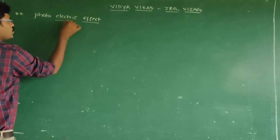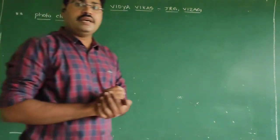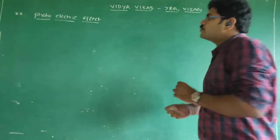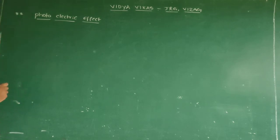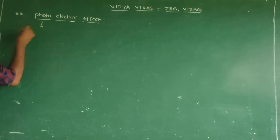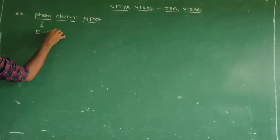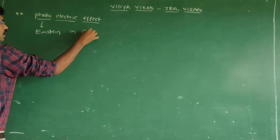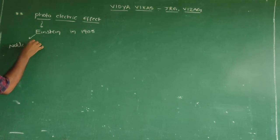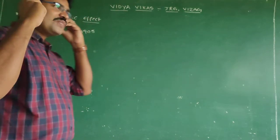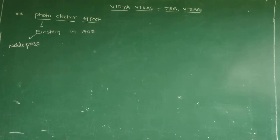Photoelectric effect - very, very important one. Students, this is the concept proposed by Mr. Einstein in the year 1905. And for this great explanation of photoelectric effect, Mr. Einstein got a Nobel Prize. So Einstein got Nobel Prize, and this is a great lecture about photoelectric effect. Now, let me come into what is photoelectric effect.